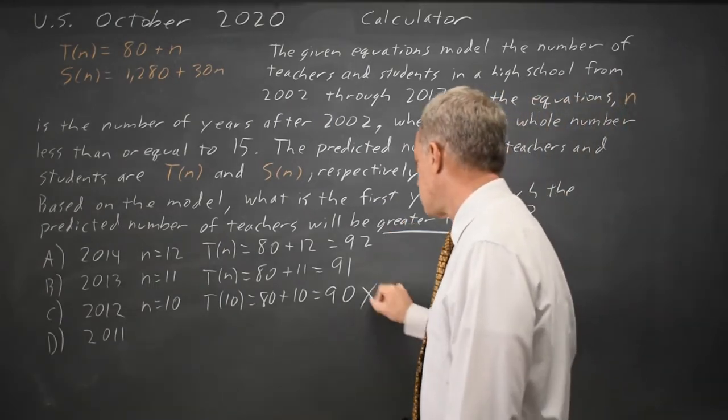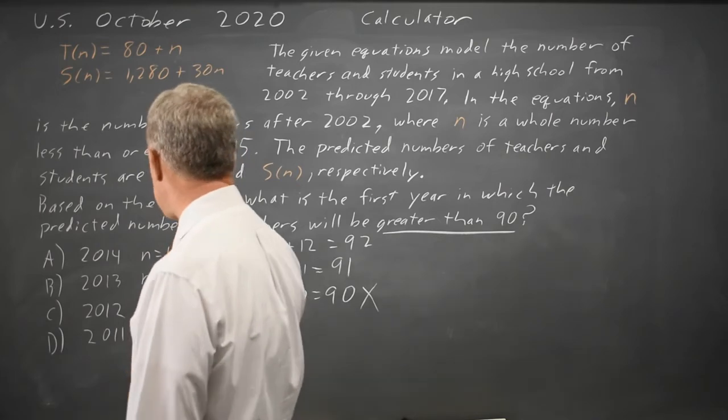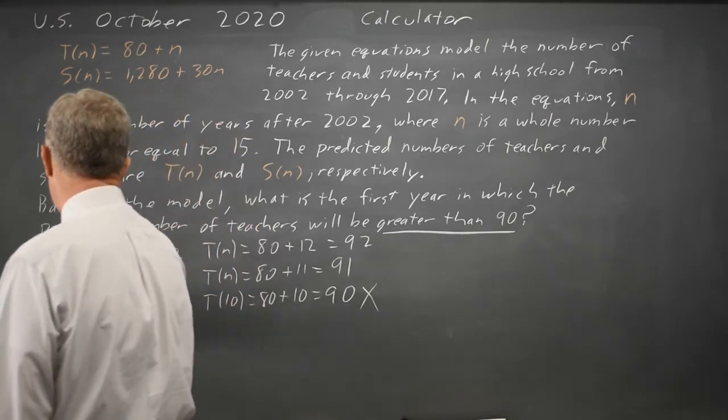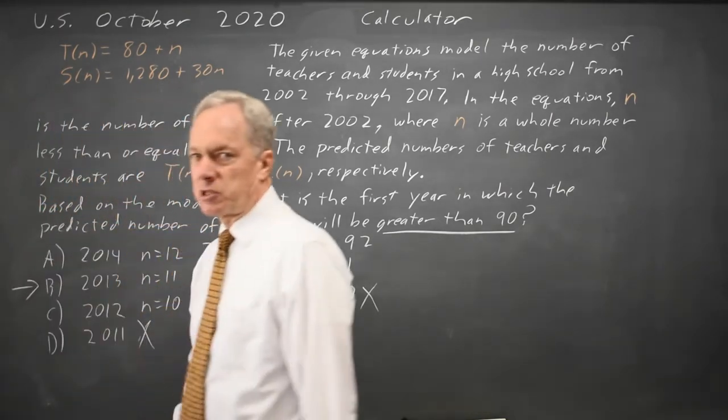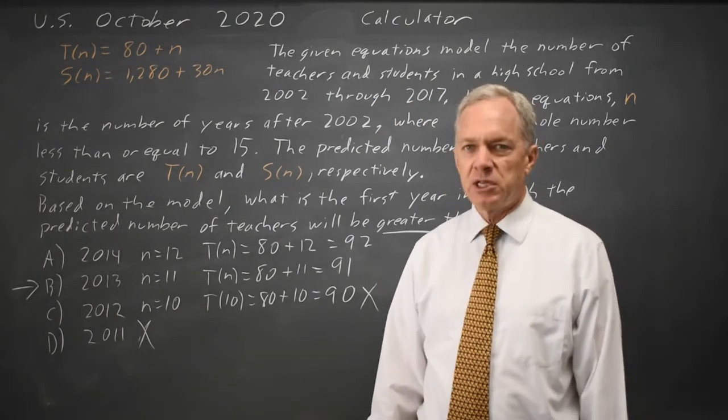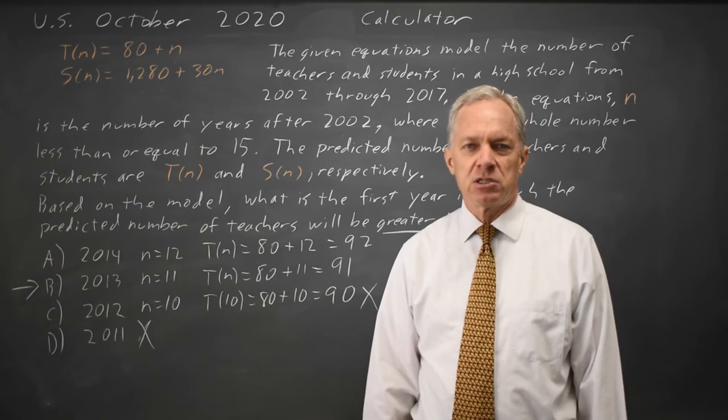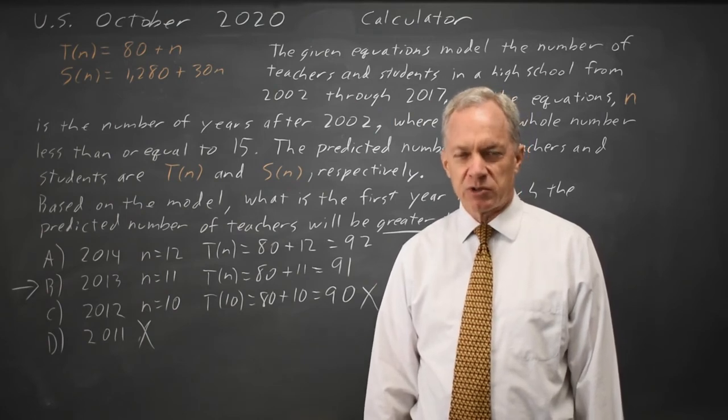So this does not work and 2011 will be less, so that does not work. The first year in which the predicted number of teachers is greater than 90 would be choice B, 2013, N equals 11, T of N equals 91, which is greater than 90.